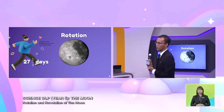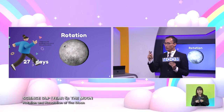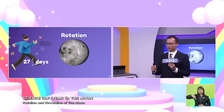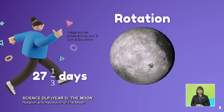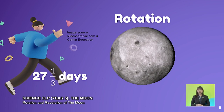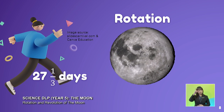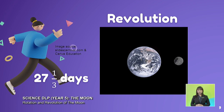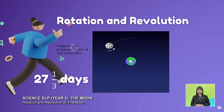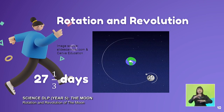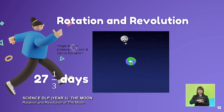The speed is the same — the speed of the moon revolving and rotating around the earth is the same, which is 27 and 1 over 3 days. Both rotation and revolution happen together. If you look at the slide, you can see that the moon is always facing the earth — the eyes of the moon are always facing the earth. This shows that the moon rotates and revolves at the same time.